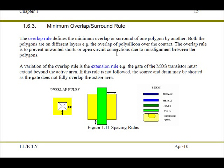The next set of rules, minimum overlap and surround rules. The overlap rule defines the minimum overlap or surround of a polygon by another. Now here, both polygons are on different layers.